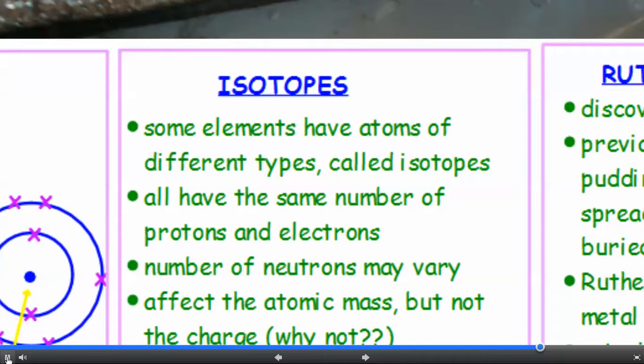So what is an isotope? Now some elements have atoms of different types, called isotopes. Now they all have the same number of protons and electrons, but the number of neutrons may vary. So this will affect the atomic mass, but not the charge. Now, why not? If you remember, neutrons have mass, but they don't have charge.